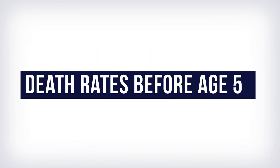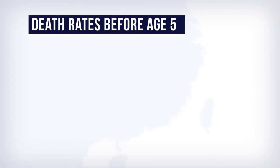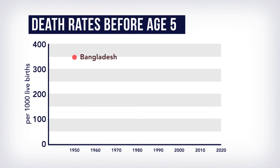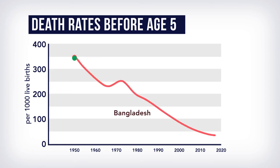However, a lot of changes have happened since the 1950s. Let's look at Bangladesh and Nigeria, which had a similar population size and child mortality in the 1950s. More than one out of three newborns died before reaching age 5 in both countries. However, declines in child mortality in Bangladesh have been three times faster than in Nigeria. In 2017, child mortality in Bangladesh decreased 90%, while it decreased only 67% in Nigeria since the 1950s.